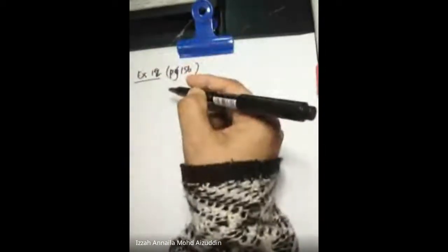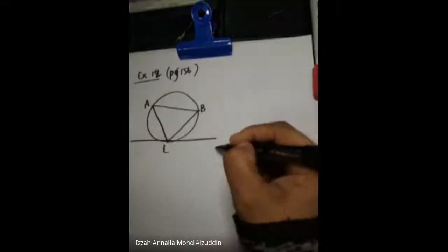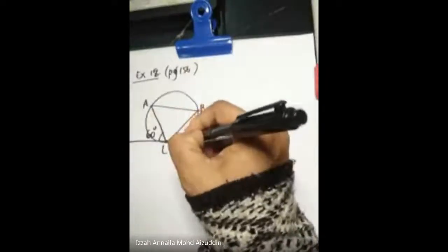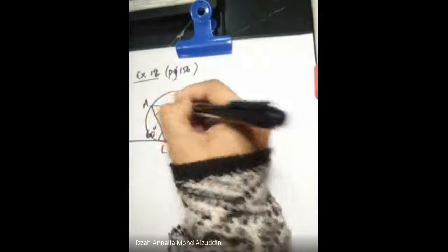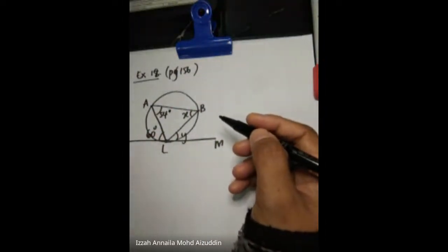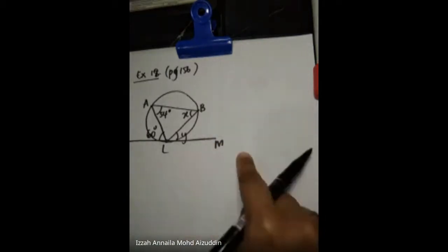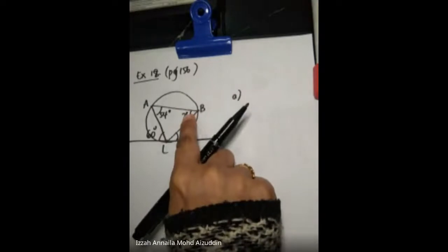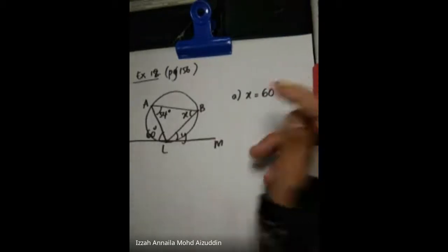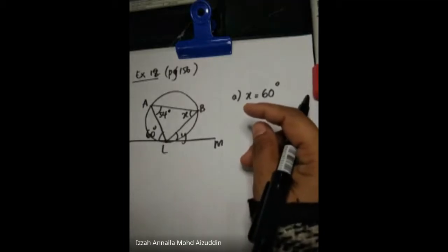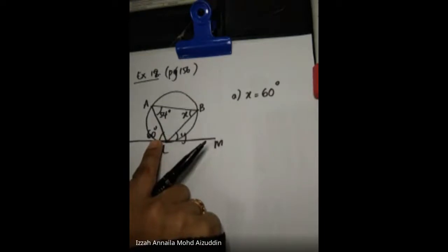Example 18: given a circle with a tangent KLM. Triangle with points A, Z, K, L, M — with 60 degrees here, Y here, X here, and 54 degrees here. How to get X? X is the interior angle, and 60 degrees is the exterior angle opposite to it. Using the alternate segment theorem, X equals 60 degrees.